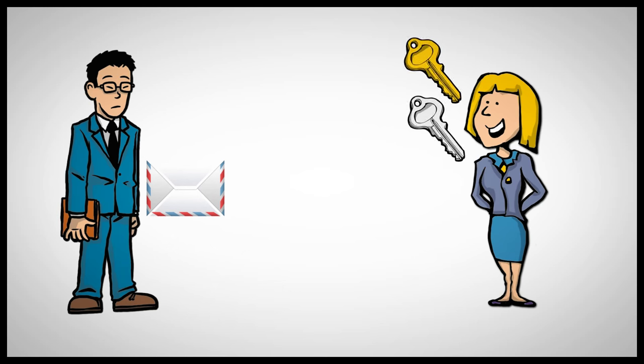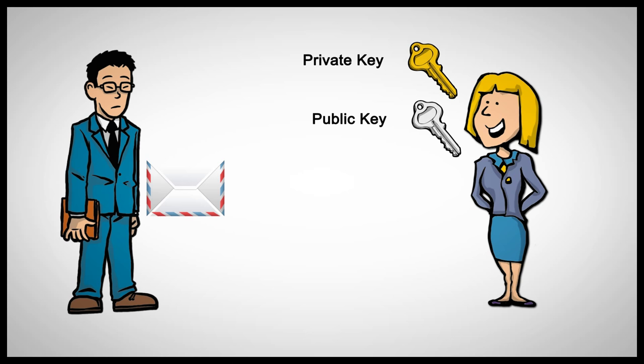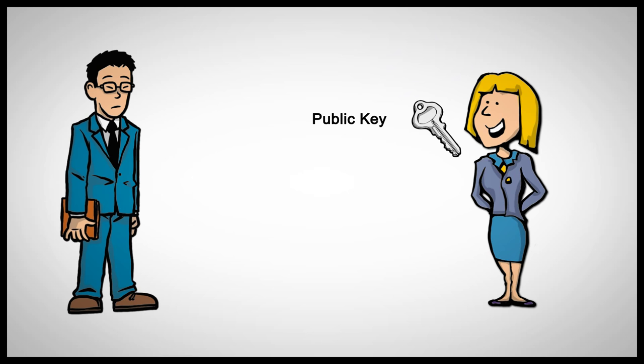Let's say that Bob wants to send a secure message to Mary. Mary has a key pair that consists of the public key and the private key. These keys are statistically unique and mathematically related, yet they are different from one another. Bob requests Mary's public key.